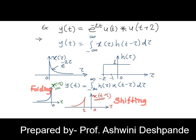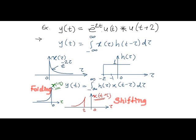Let us perform convolution between an exponential signal e raised to minus 2t u of t and a unit step signal u of t plus 2.